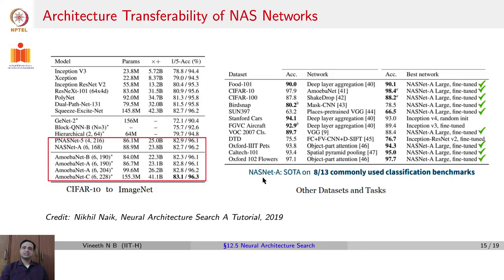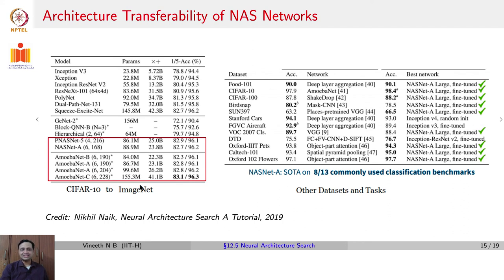Other considerations looked at in the NAS community include architecture transferability. If we learn an architecture through a NAS method on CIFAR-10, how well does it transfer to ImageNet? Research has shown that many contemporary NAS methods deliver fairly well on this count, where an architecture trained on CIFAR-10 also performs reasonably on ImageNet as well as on other datasets and tasks.